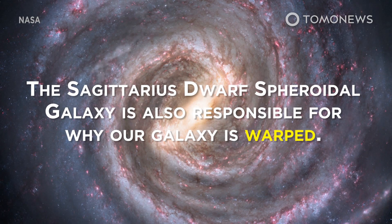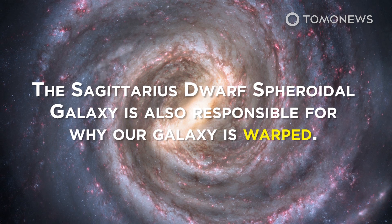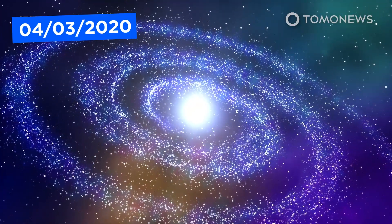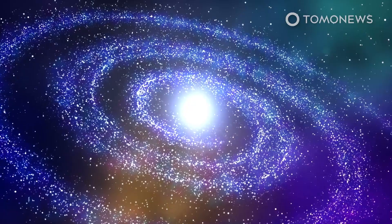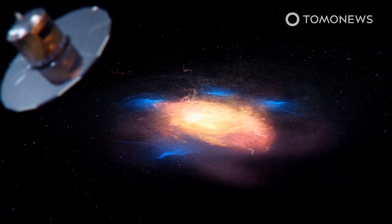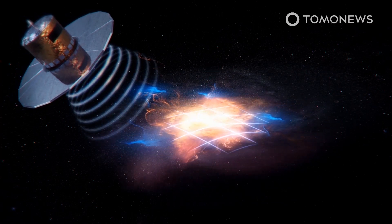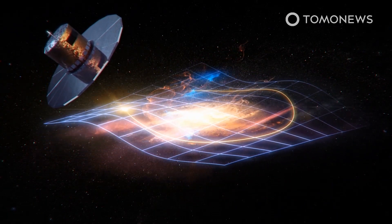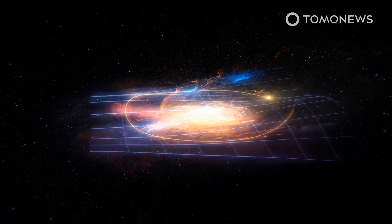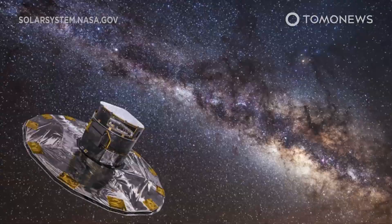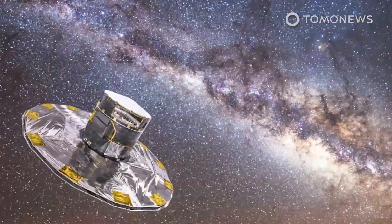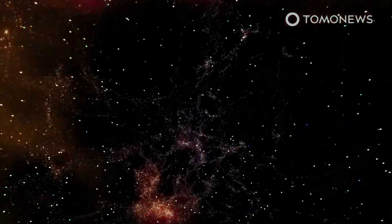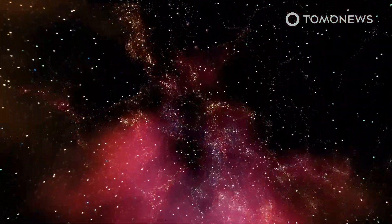The Sagittarius Dwarf Spheroidal Galaxy is also responsible for why our galaxy is warped. Researchers say collisions with other galaxies might be why the Milky Way is bent out of shape. The European Space Agency's space observatory GAIA may have found an explanation for the warped shape of the Milky Way galaxy, which is bent into an S shape. This warp rotates with the galaxy's stars instead of standing still. The European Space Agency launched GAIA in 2013 to render a 3D map of the Milky Way, and the survey will eventually take a spatial census of one billion stars — about one percent of its constituents.